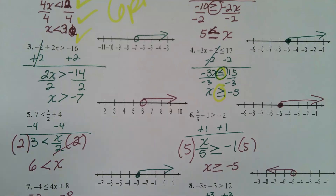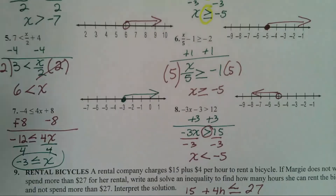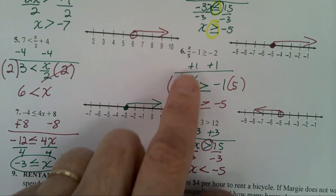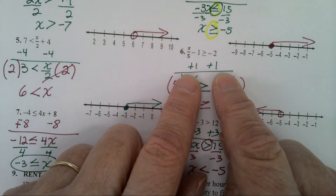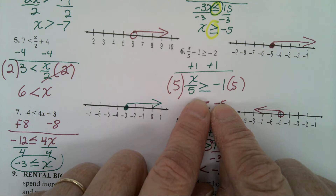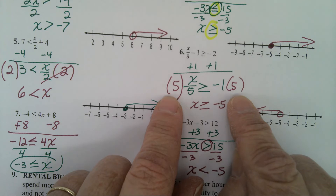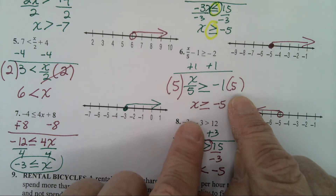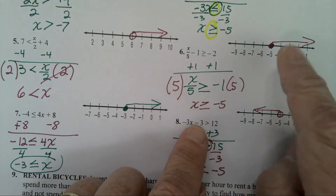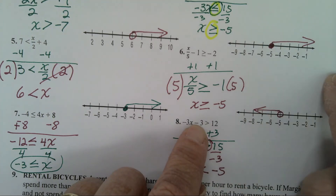Let's go to number 6. In number 6, you add 1 to both sides. You then have x divided by 5 is greater than or equal to negative 1. To undo dividing by 5, you multiply both sides by 5. X is greater than or equal to negative 5. It's going to be an open circle on the negative 5 going to the right.